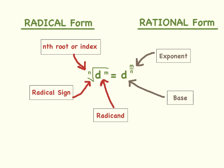Now let's look at the radical sign itself. Most of you are familiar with this and might call it the square root symbol, but really this is a radical sign. What makes it a square root symbol is if the index is the invisible 2. Now let's look at what is inside the radical sign — that is called the radicand. The radicand is everything inside the radical sign. So in this example, d to the m power is the radicand, not just the d. It's everything within the radical sign.